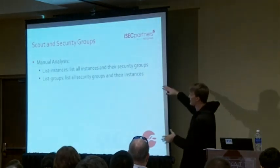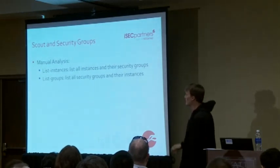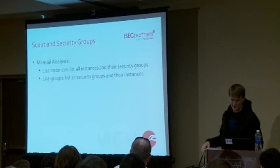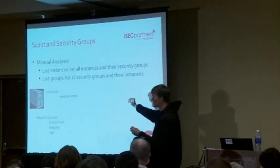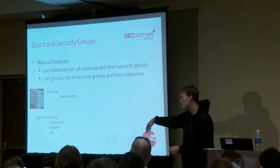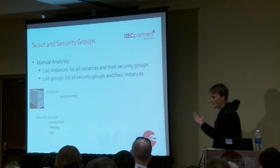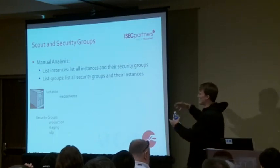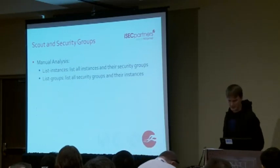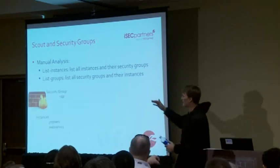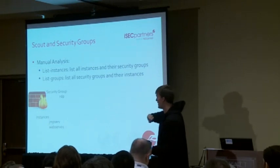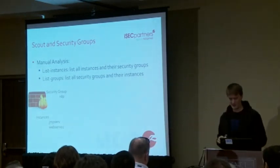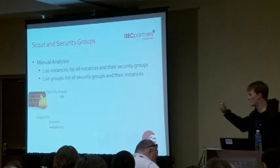At its most basic level we wanted to enhance manual analysis by listing instances and their security groups, and listing security groups and their instances. For example, if you're looking at a web server instance you can dump all its security groups - production, staging, RDP - and you might question why RDP is applied to a production web server, that's really not necessary. Similarly, you can dump a security group and see all instances with RDP applied - like a jump server and a web server. A jump server, for those unfamiliar, is a server you connect to in order to remotely administer the rest of your instances.